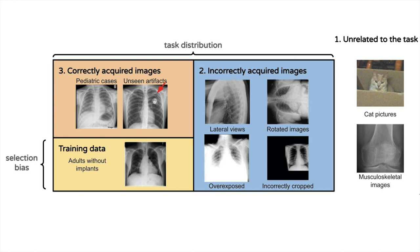We enumerate three use cases of out-of-distribution examples. Use case one covers inputs that are unrelated to the task. This includes obviously wrong inputs from a different domain — for example, an fMRI image given to an X-ray classifier, or a cartoon image given to a natural image classifier. This also includes less obviously wrong inputs, such as a wrist X-ray given to a chest X-ray classifier.